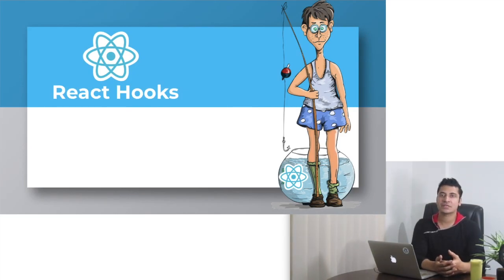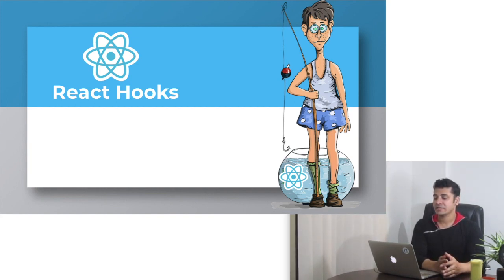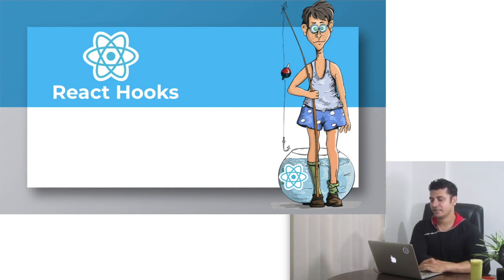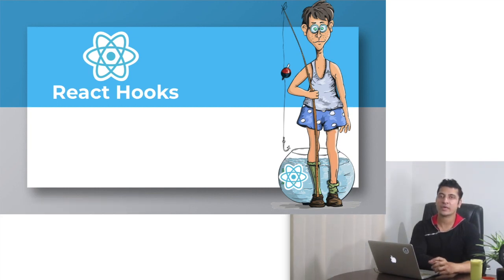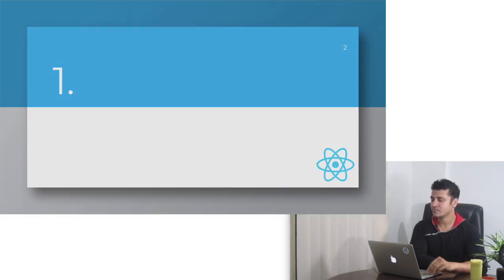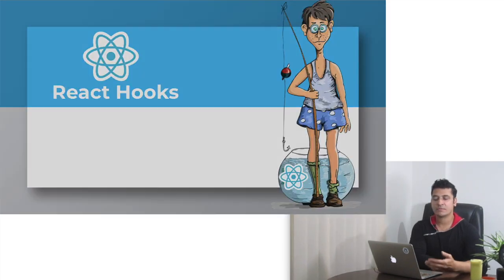Hi guys, my name is Imran and in this tutorial series we're going to learn about what are hooks in React — what they actually are, why we should use them, what are the different types of hooks, and how to implement them. Hooks are functions that allow us to hook into React features. A hook is a special function that lets you hook into React features like state and other features as well.